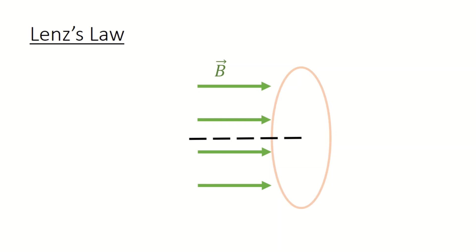If the magnetic field decreases, then the magnetic field of the induced current should be directed to the right. In order for this to happen, by using the right-hand rule, the induced current should be in this direction.